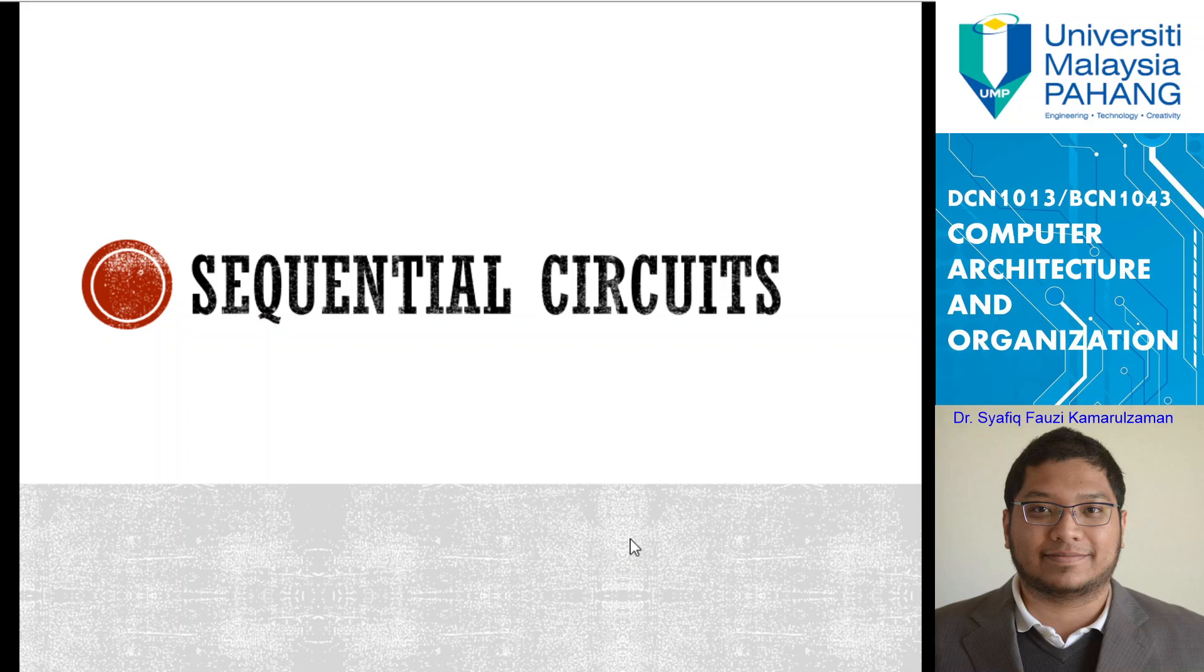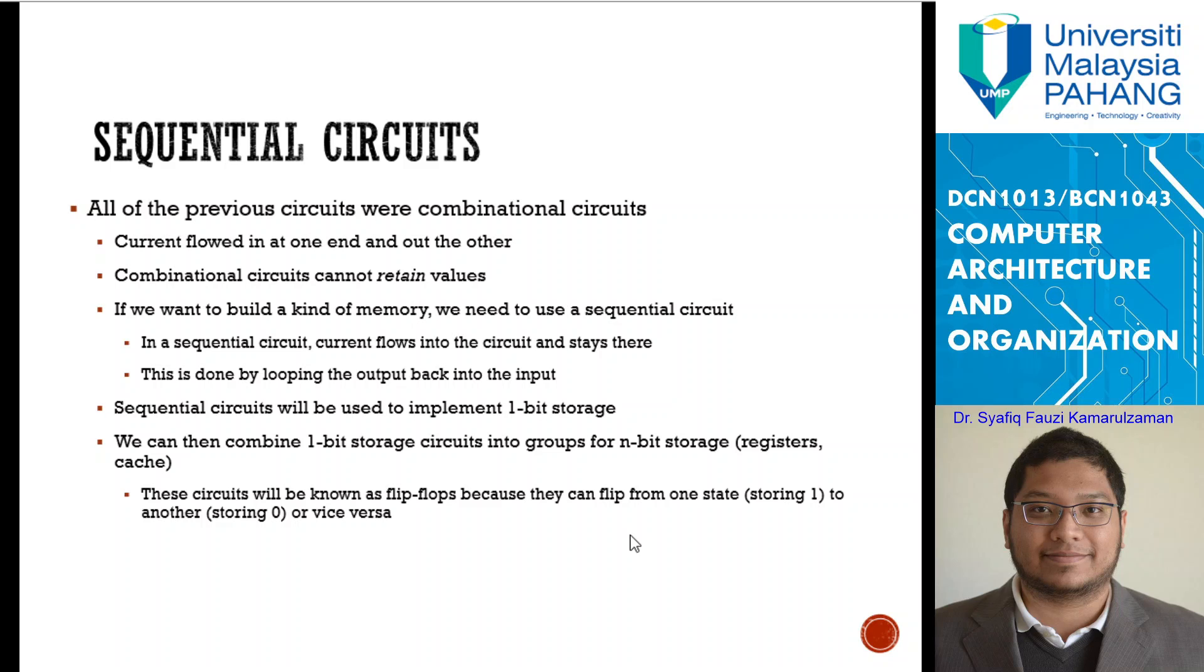If you look at combinational circuits, current flows in at one end and out of the other. Basically, data comes in and data goes out. Combinational circuits cannot retain values, it cannot store data inside. If we want to build a kind of memory, we need to use what we call sequential circuit. This is done by looping the output back into the input.